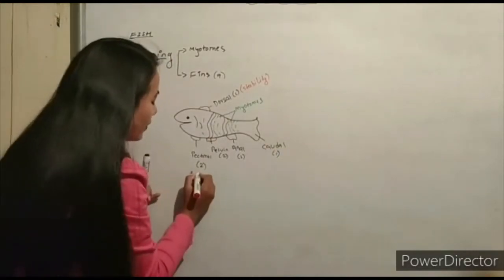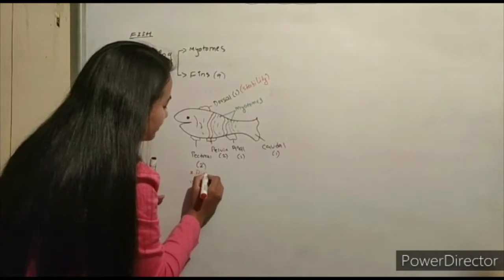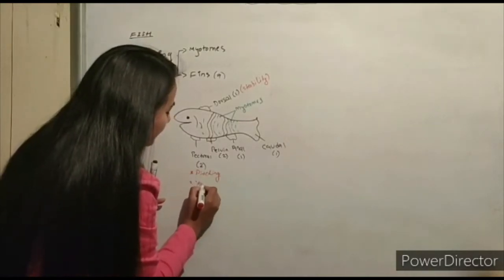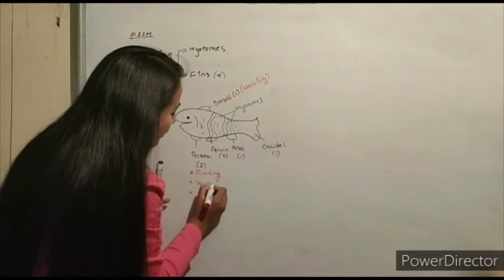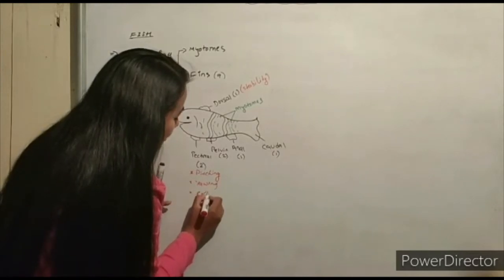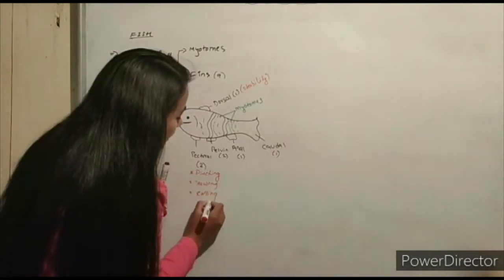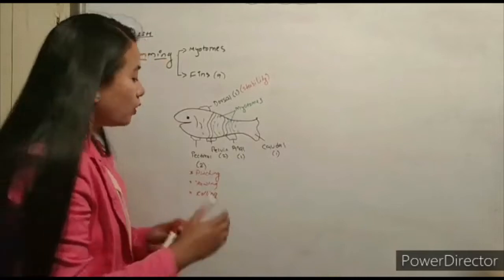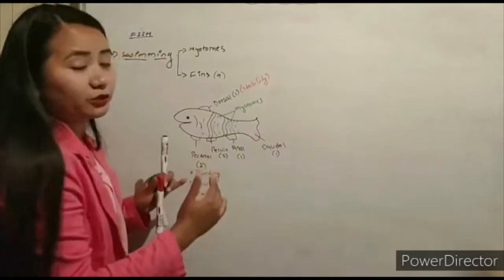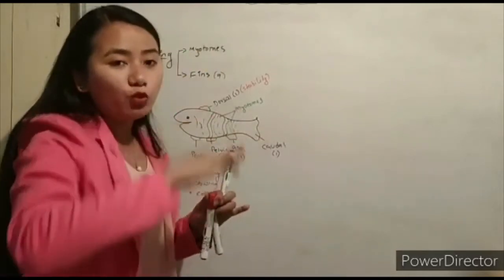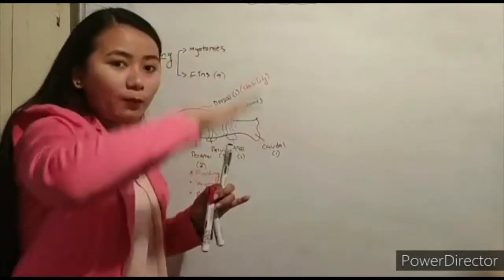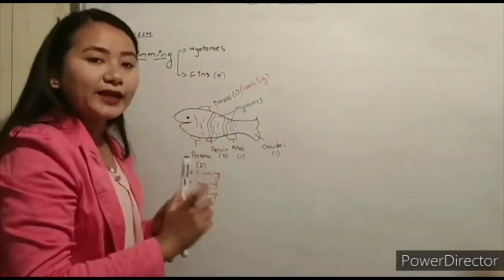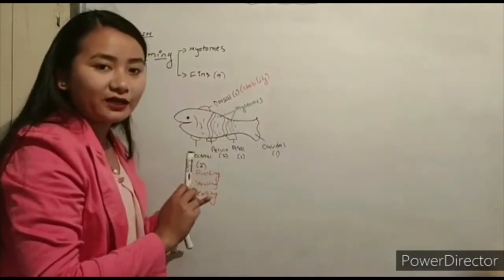The dorsal fin plays a very important role — it prevents three movements: number one, pitching, which is up and down movement; number two, yawing, which is side to side movement; number three, rolling.